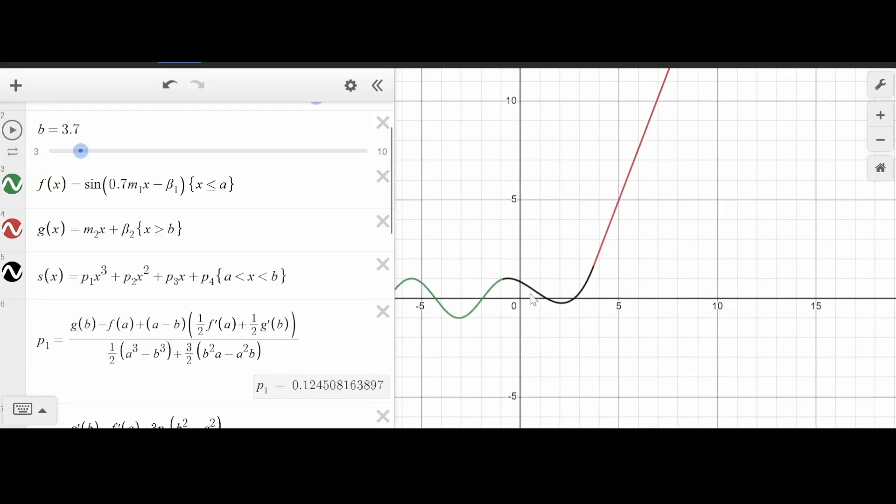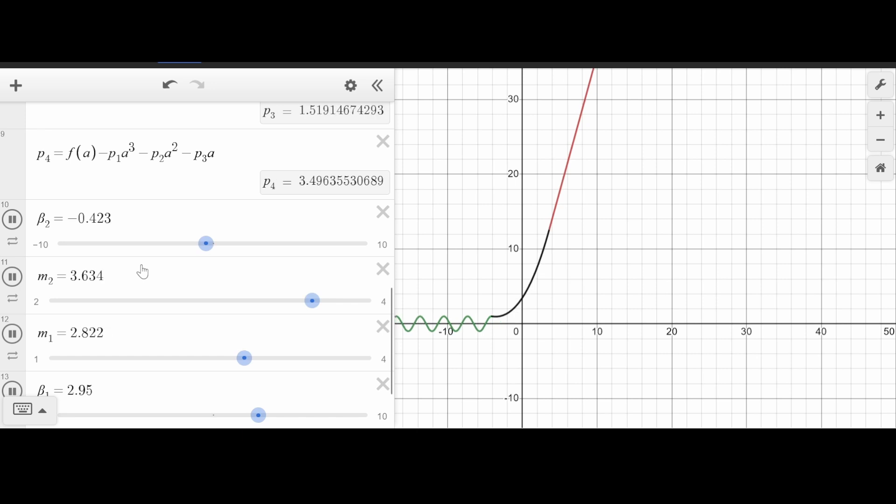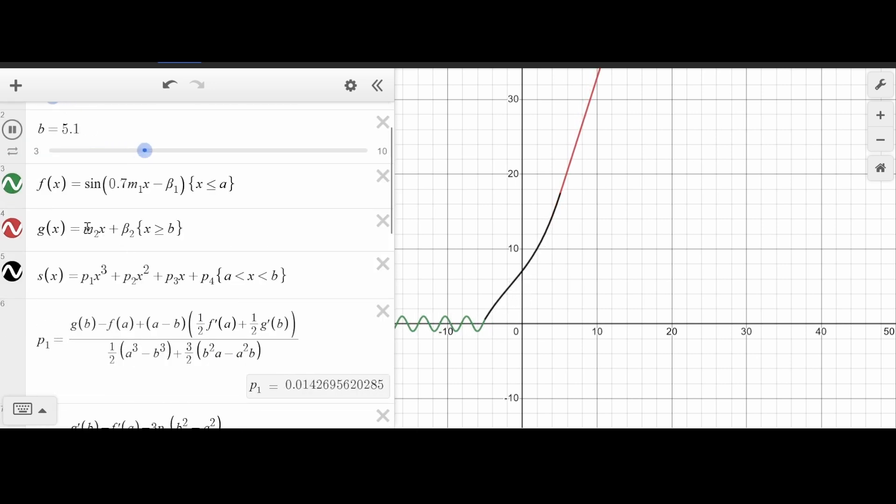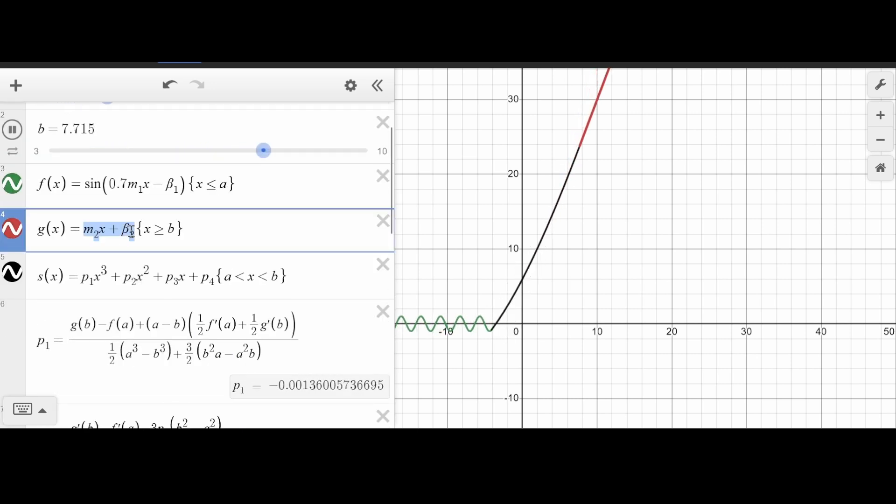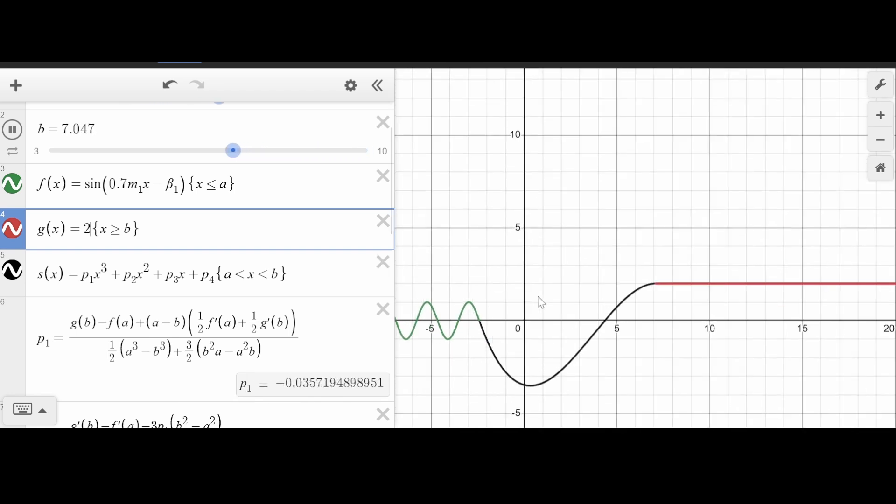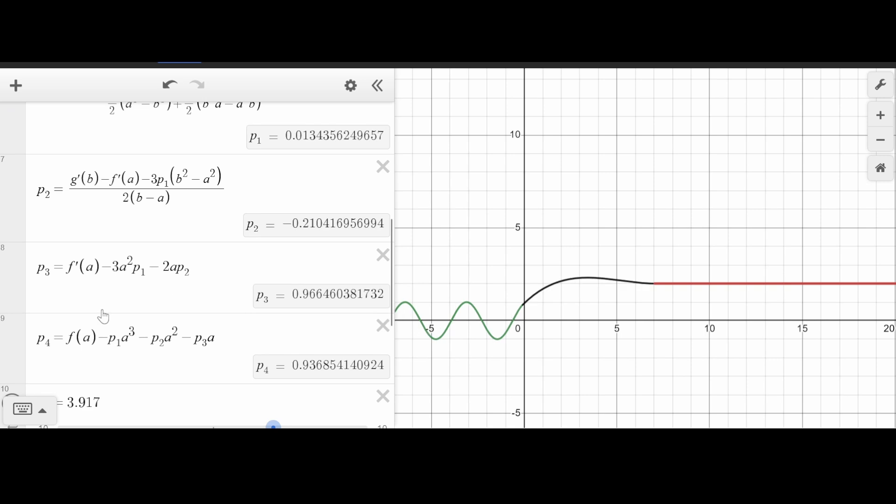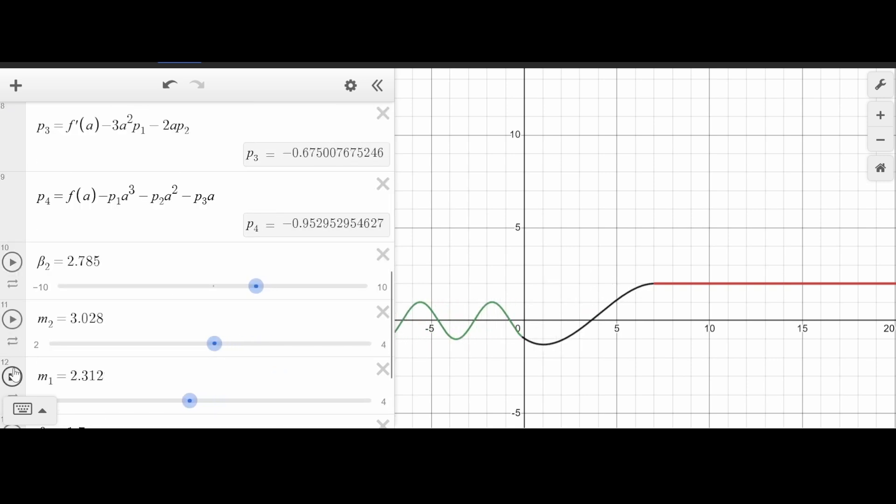The black curve is the spline function. The green curve is f, and the red curve is g. And as you can see, it smoothly connects. You can change the functions. I just chose sine and linear, but you know, maybe we can make it constant. I guess something kind of interesting like this. It's not perfect in that it doesn't look good everywhere, but it always is technically correct.